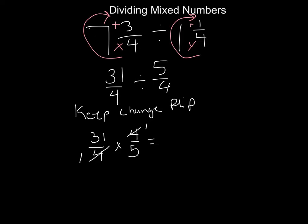And now we can multiply: 31 times 1 is 31 and 1 times 5 is 5.